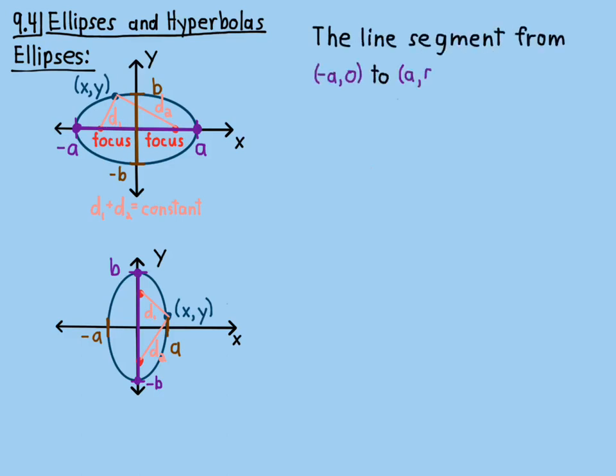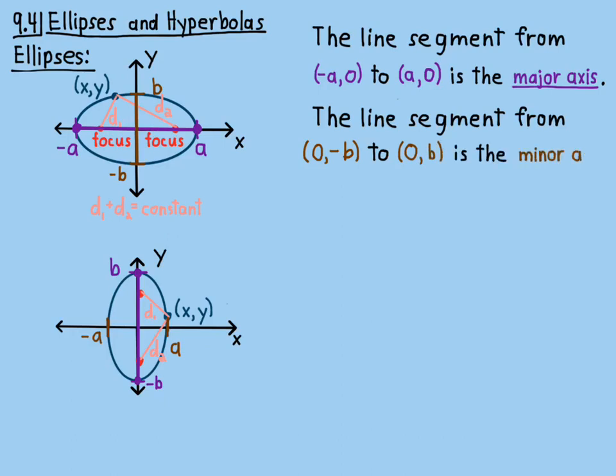The line segment from negative A0 to A0 is called the major axis. That's a longer segment than if you went from B minus to B. So, the line segment from 0 negative B to 0 B is the minor axis. So, the minor axis on this top one is brown. That's the brown letters and the brown, there's a little brown line, if you can see that. And the major axis, I colored purple. And the letters associated with the endpoints, I colored purple as well.